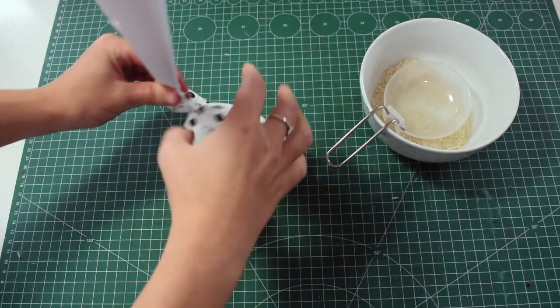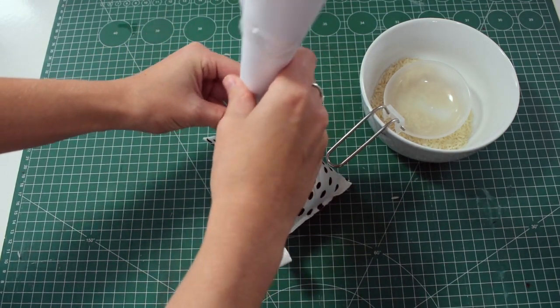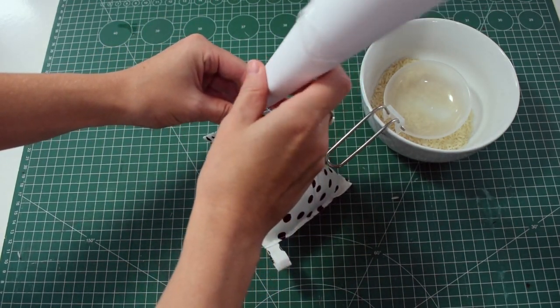As you can see I had nothing to sieve my rice through so I made a cone out of paper which is pretty simple and easy to do.